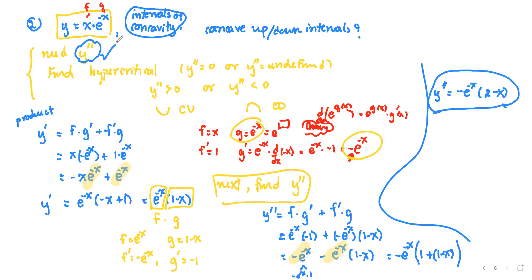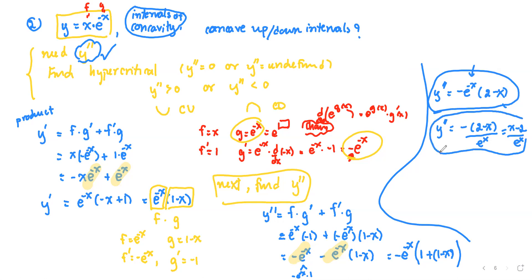We have y double prime. Using the concept of negative exponents as reciprocals, we can rewrite this as negative of the quantity two minus x divided by e to the x, which simplifies to x minus two divided by e to the x. I simplify to this form to avoid negative exponents and make finding hypercritical values easier.